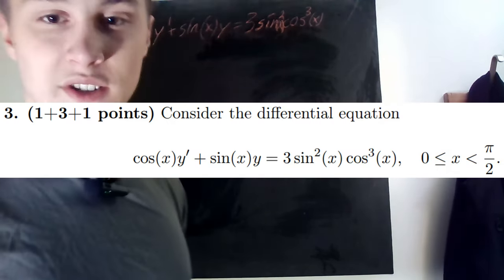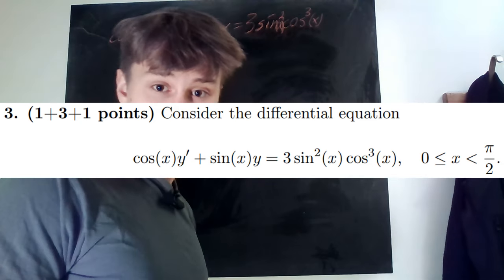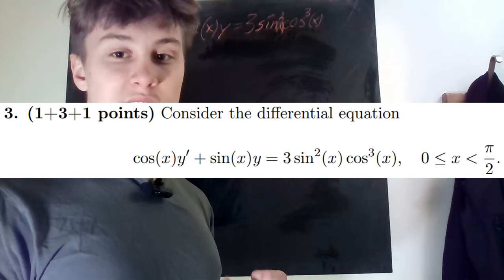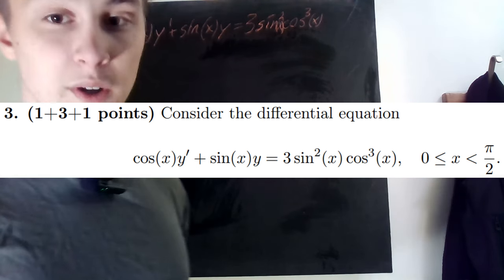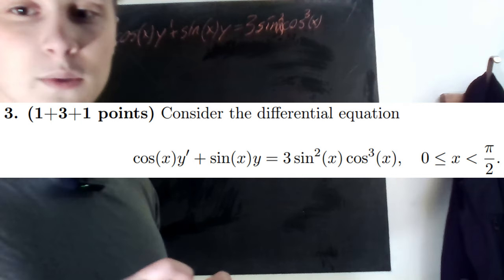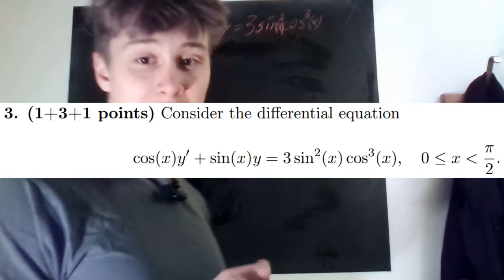Consider the differential equation cosine x y prime plus sine x y equals three sine squared x times cosine cubed of x where zero is less than or equal to x which is strictly less than pi over 2.